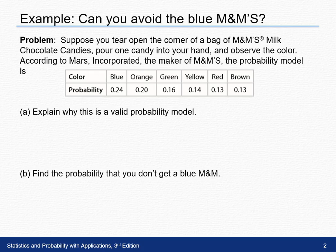Suppose you tear open the corner of a bag of M&Ms milk chocolate candies and pour one candy into your hand. Then you observe the color. According to Mars Incorporated, the maker of M&Ms, the probability model is.